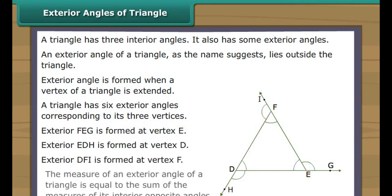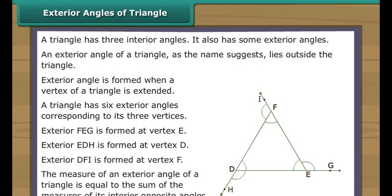The measure of an exterior angle of a triangle is equal to the sum of the measures of its interior opposite angles. In the figure, angle FEG is equal to the sum of angles FDE and DFE.